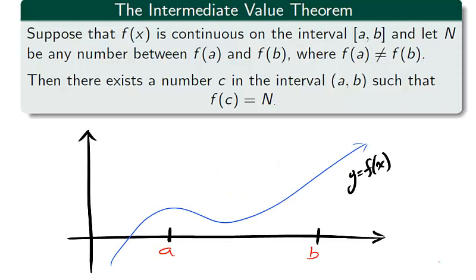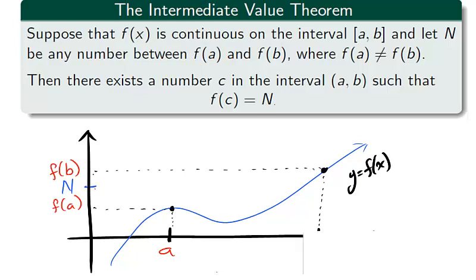Given a continuous function f on the interval [a,b], since continuity has a constant flow, if we take any y value N between f(a) and f(b), then we expect to find an x value c between a and b where f(c) is equal to N.